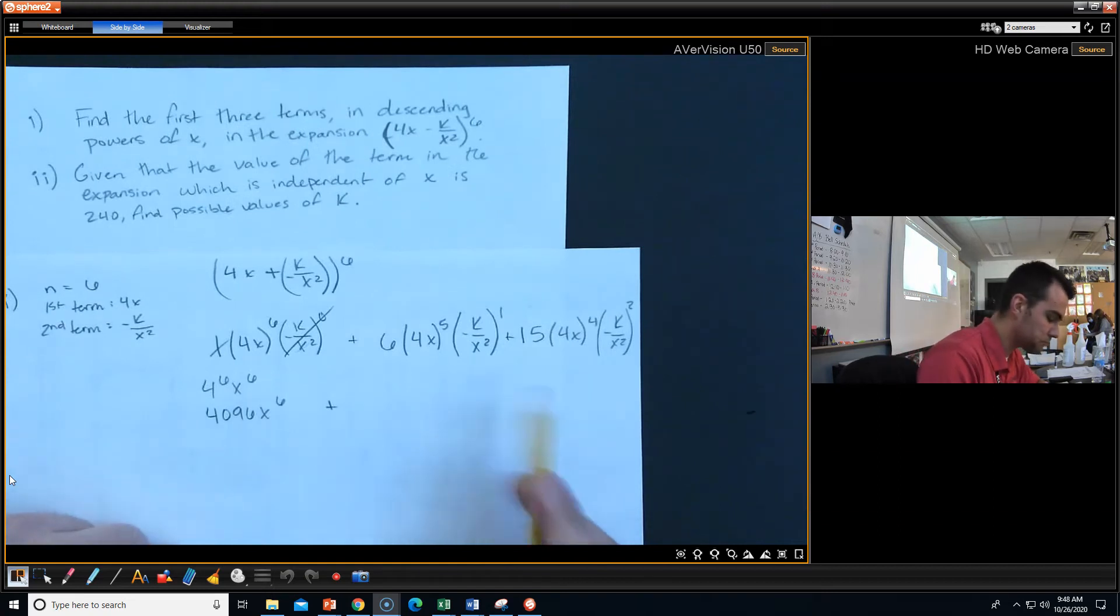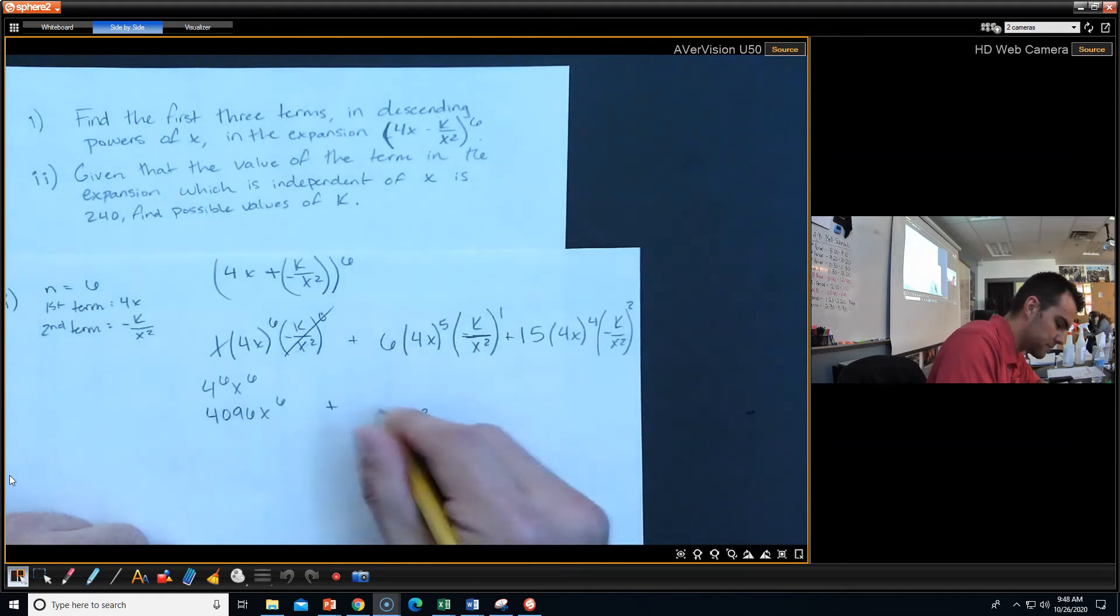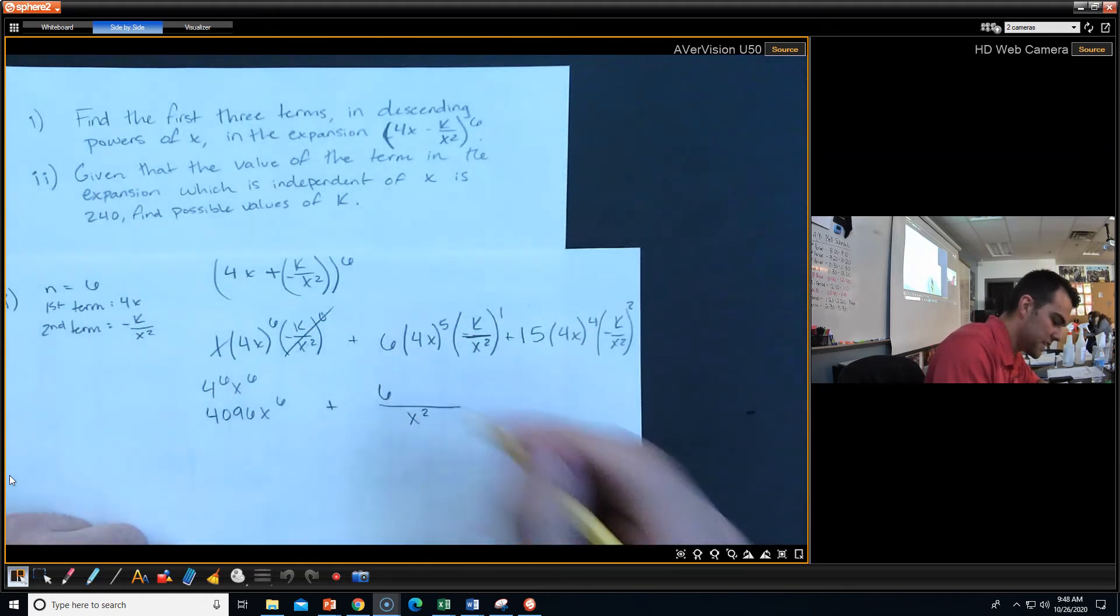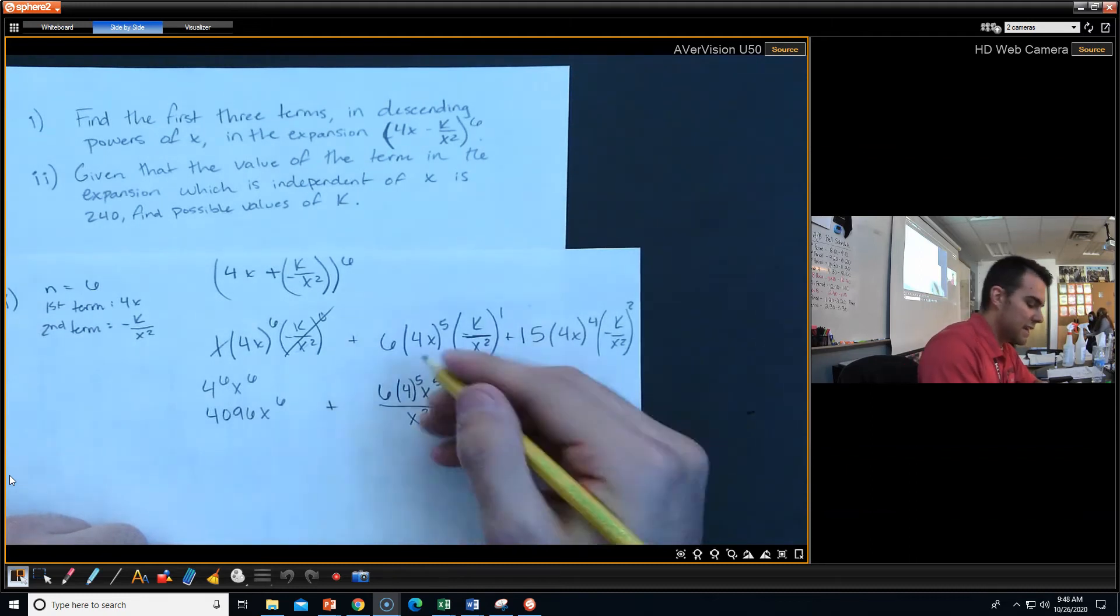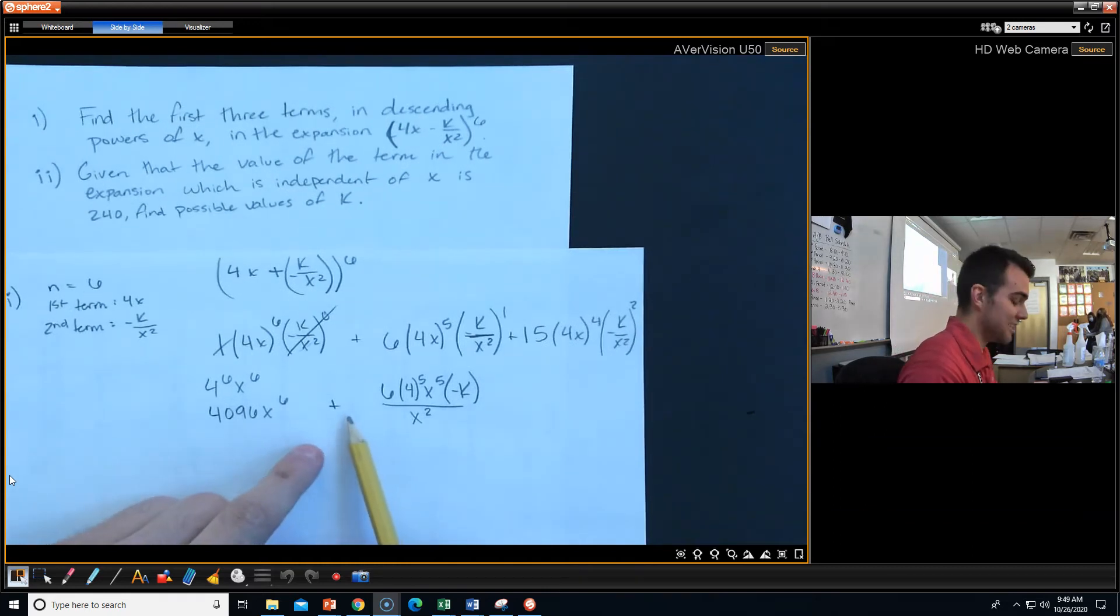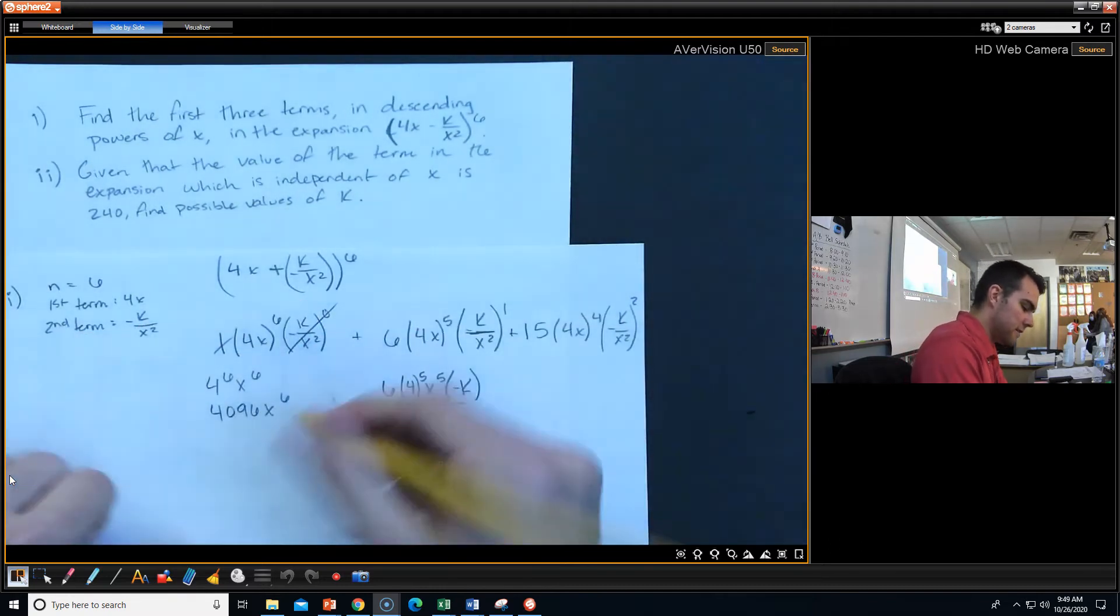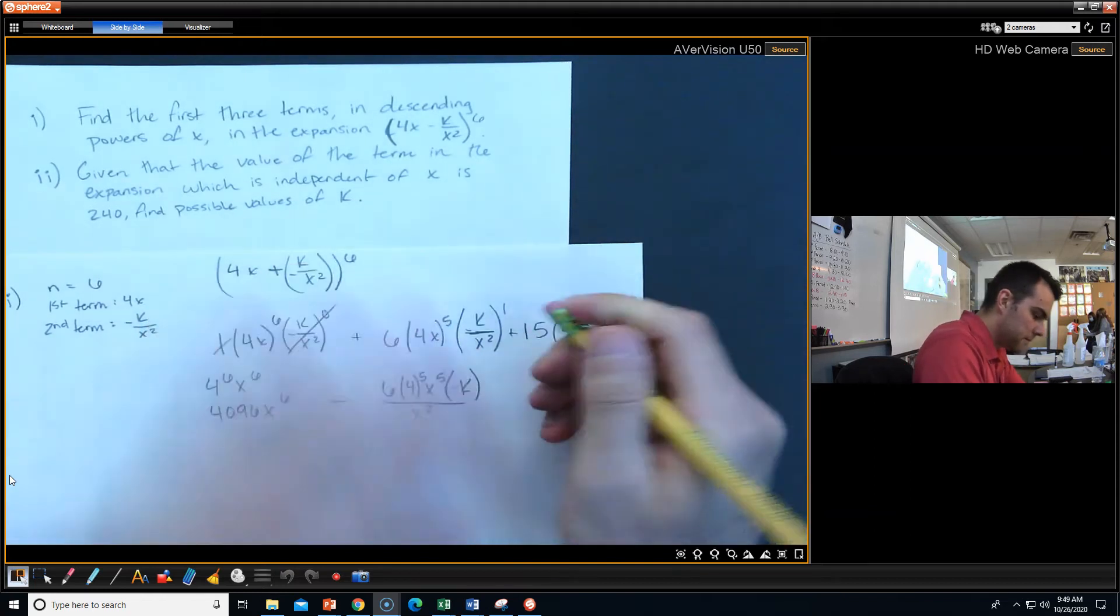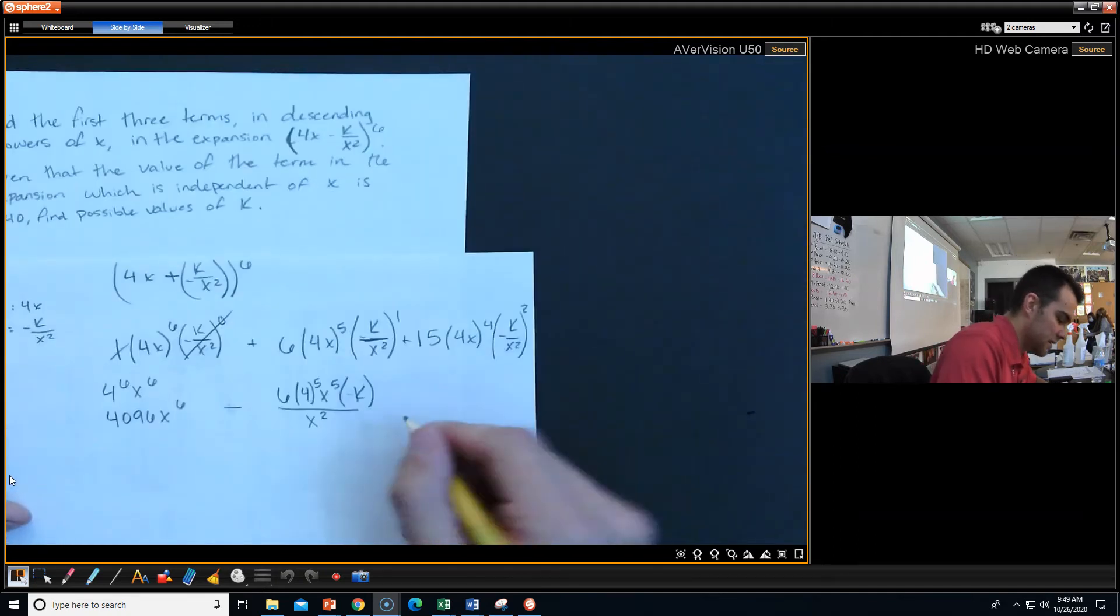Let's look at this second term right here. For this second term, we're going to plop that x squared that's going to be on the bottom down here. And now let's focus on the top stuff. We got 6 times 4 to the 5th, x to the 5th, and then we have a negative k right here. What's going to happen to my sign? It's going to be a minus, right? Because we're multiplying by a negative.